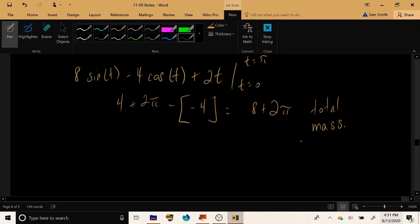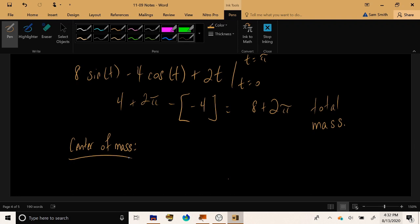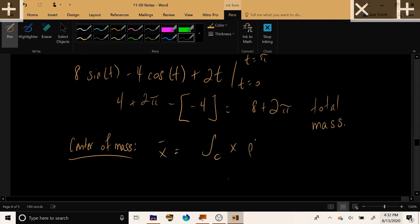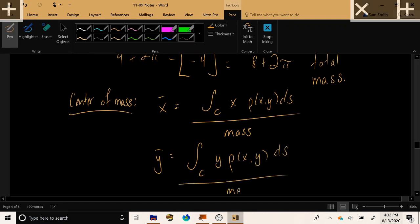Now, when it comes to the center of mass, the same formulas apply here that we used so often back in Calculus 1 and when we were doing double and triple integrals. If you want x bar, you can calculate the line integral of x rho xy and divide it by the total mass. And if you want y bar, you can do the line integral of y rho xy ds and divide that by the total mass.